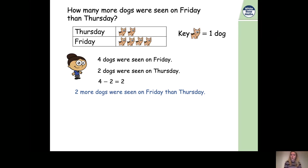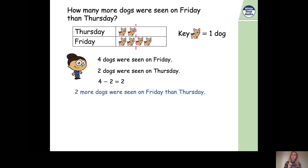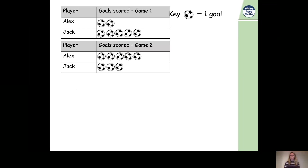So therefore two more dogs were seen on Friday than Thursday. Now let's use the other girl's method to check our answer. She looked for the day with the least amount of dogs, drew a line after the last dog on that day, then counted how many dogs were on the other side of the line. There are two pictures of dogs, which means two dogs — and two pictures represents two dogs. So we were right: two more dogs were seen on Friday than Thursday.